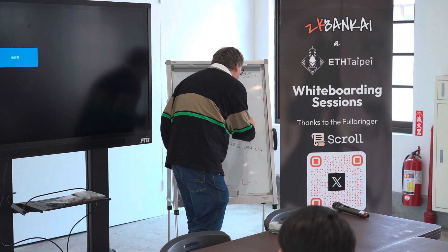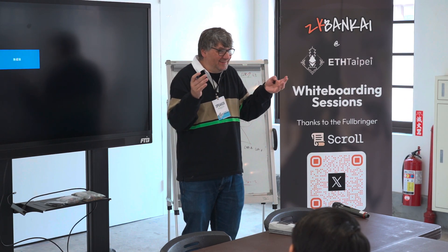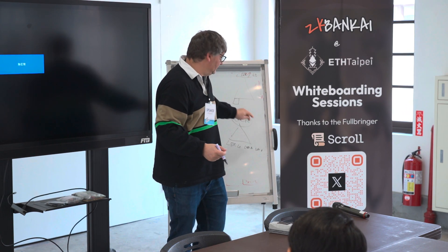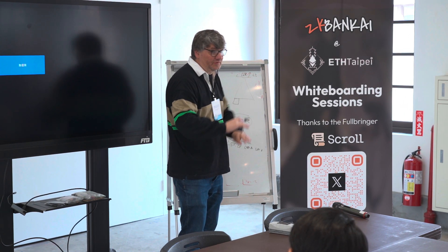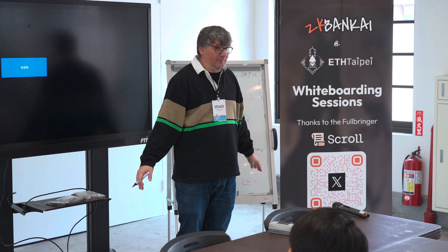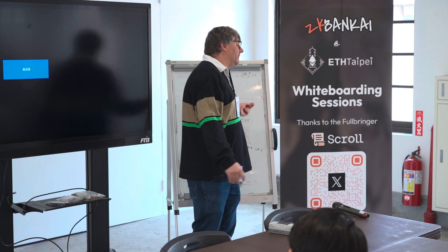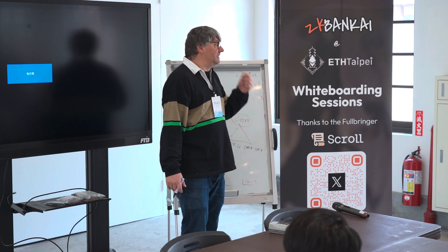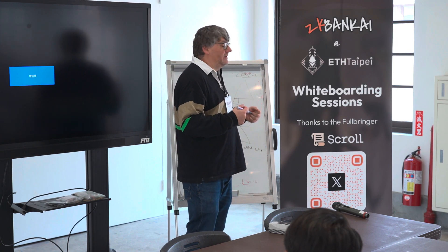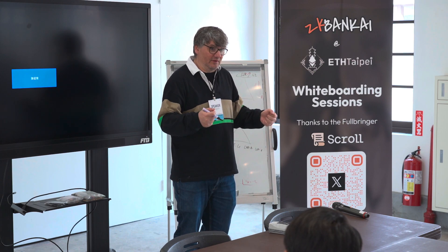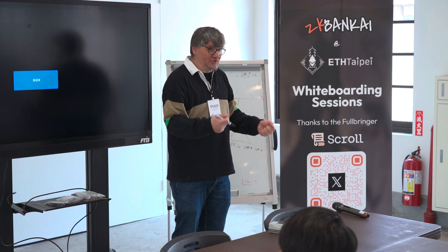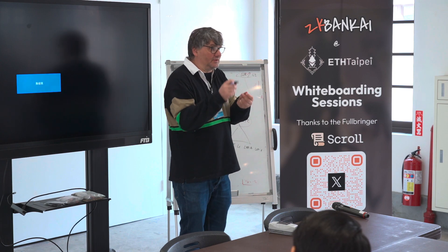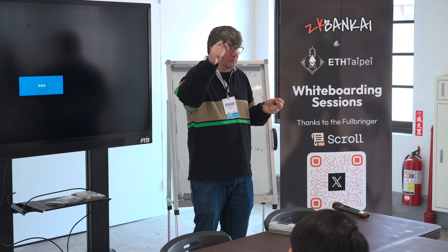This global exit root is the only piece that is transferred to the roll-ups — it is broadcast to all the roll-ups. The global exit root is updated every time a proof is generated. So every time a roll-up generates a proof, the roll-up has a new local exit root, and then this local exit root is included in the global exit.